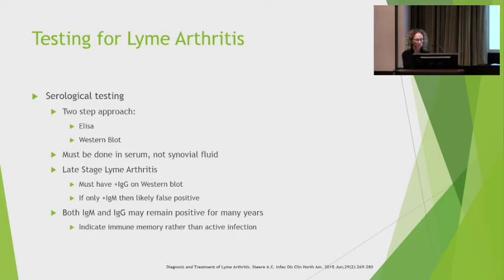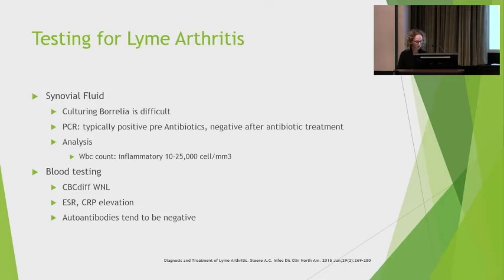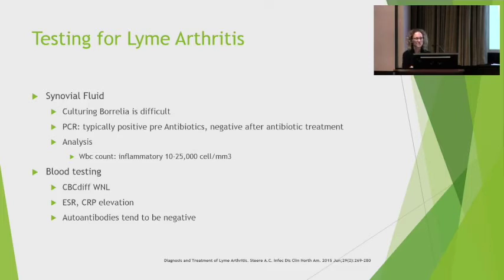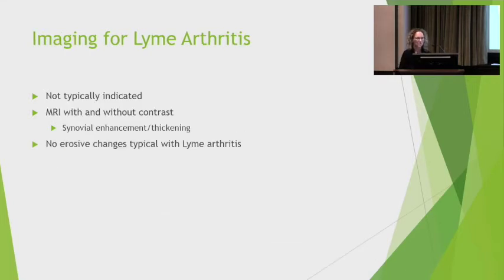If a patient has already been treated and IgG remains persistently positive, that does not mean you need to continue treating. Synovial fluid culturing is very difficult, likely due to hostile inflammatory mediators in the synovium. PCR from synovial fluid can be positive, especially before antibiotics are started, and is typically negative after treatment. Synovial fluid WBC count tends to be high in the 10,000–25,000 cells per mm³ range. CBC tends to be normal; sed rate and CRP are minimally to moderately elevated. Autoantibodies tend to be negative, though ANA can be positive in low to mild-moderate titers.